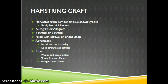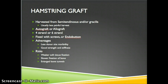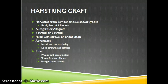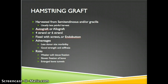A hamstring graft is harvested from the semitendinosis and/or the gracilis, and is usually a less painful harvest than the patellar tendon. It can be either an autograft or an allograft, and is done in either a four-strand or six-strand form, where the tendon is looped to strengthen it and can range from four to six loops. It is then fixed with screws or an endo button. Advantages include less donor site morbidity and good strength and stiffness. Risks are weaker soft tissue fixation, slower fixation to bone, and enlarged bone tunnels.